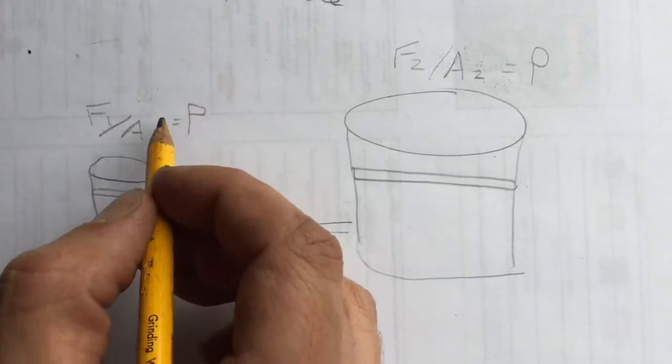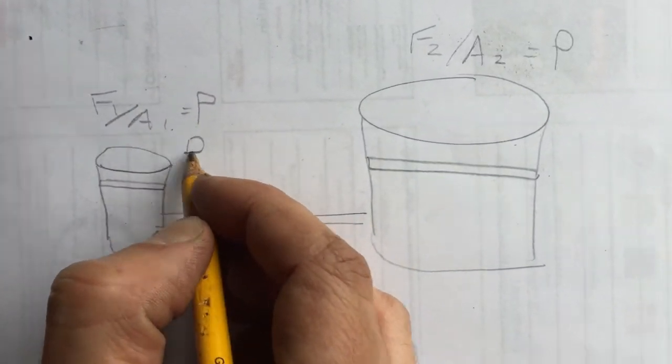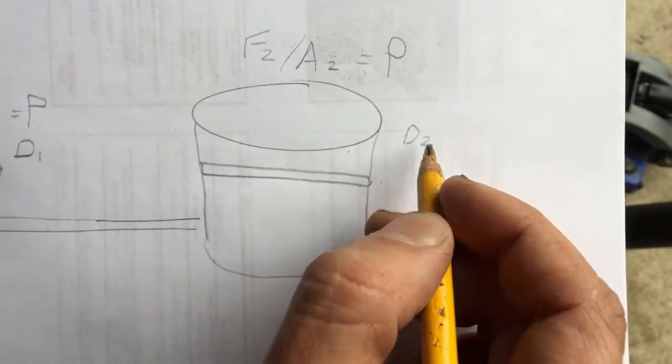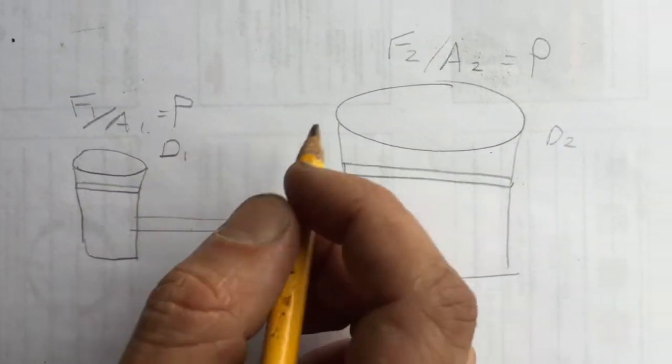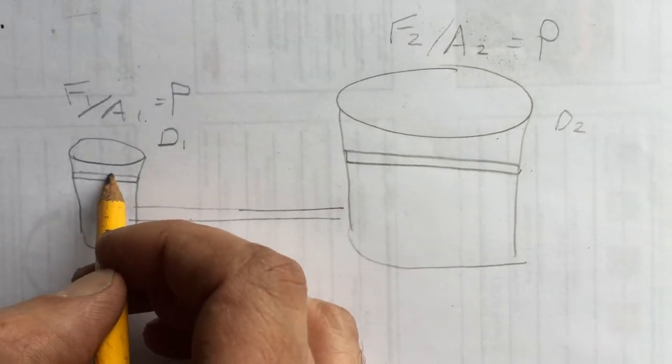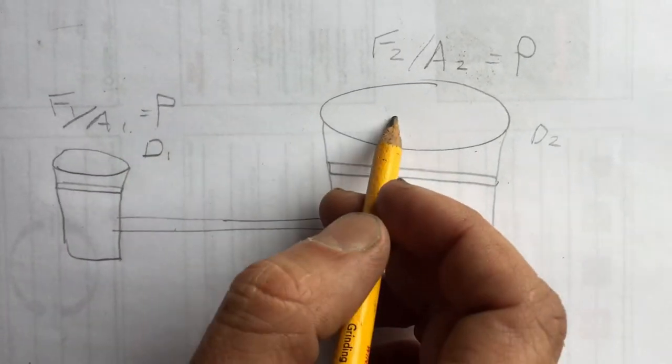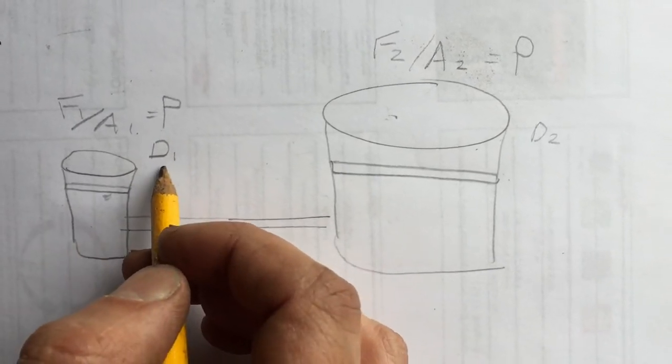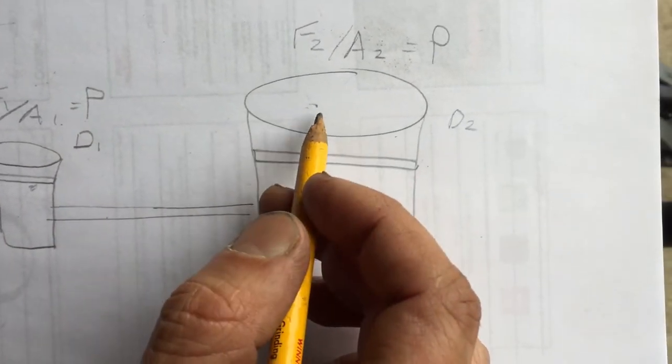Work equals force times distance. So the distance here you move, d1 and d2, are not equal. So if this was 10 times bigger than this, you'd get 10 times more force from here out of this, you guys agree, but d2 would move 10 times less than d1, right?